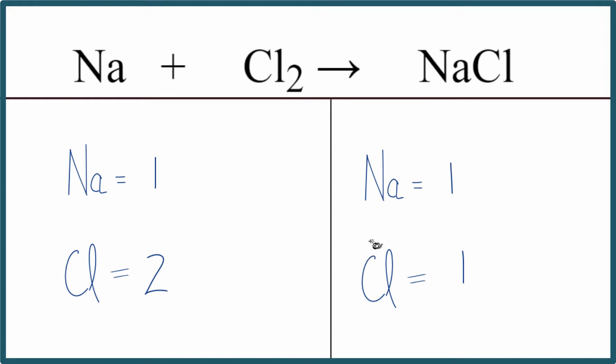Now we can balance the equation. The only thing we can change are the numbers in front. These are called the coefficients. Right now, they're ones. We don't write it, but they're assumed to be one. We can't change these subscripts, these numbers after. Those we can't change.